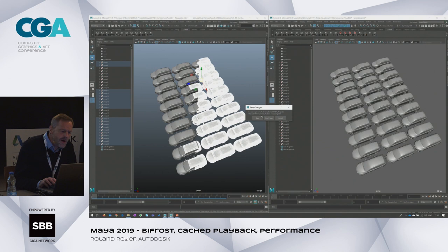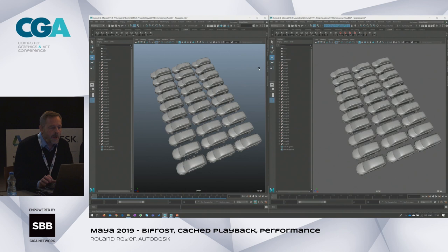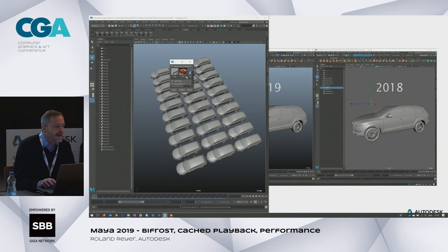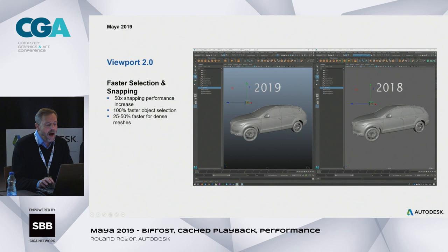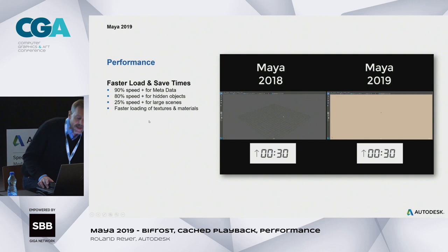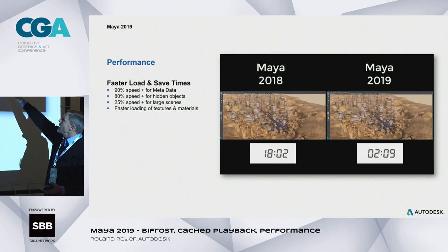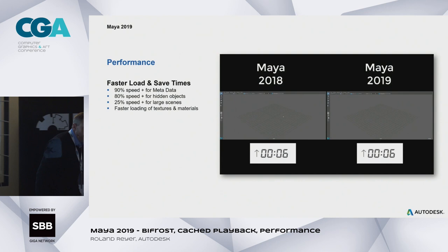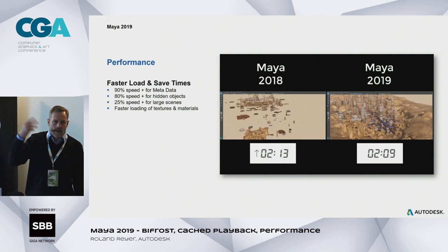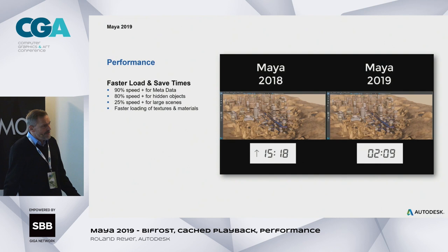So when we have a slide saying 'you gain a lot of performance, trust us,' there's really something there. And sometimes when we say we made something a hundred percent faster, there really is something behind it. Then there's this comparison: we loaded the same scene in Maya 2018 and Maya 2019. It took 2 minutes in 2019 and 18 minutes in 2018. That scene is special because it contains all the problems in a huge amount — but waiting 20 minutes for your scene to load is a big deal.